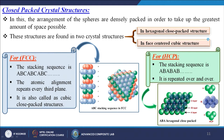Close-packed crystal structures have spheres densely packed to take up the greatest amount of space. These are found in two structures: HCP and FCC. For FCC, the stacking sequence is ABCABC... — the atomic alignment repeats every third plane, also called cubic close packed. For HCP, the stacking sequence is ABABAB... — a layer-by-layer structure alternating A and B layers.